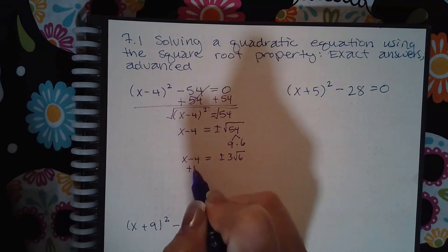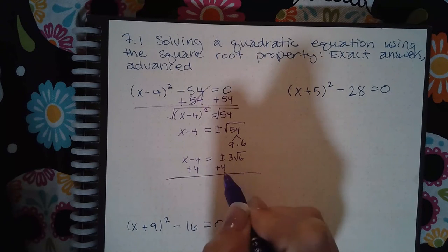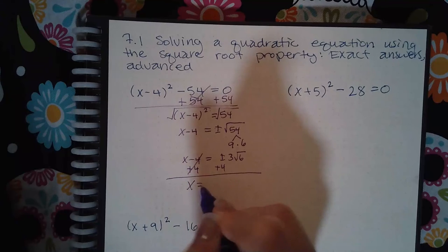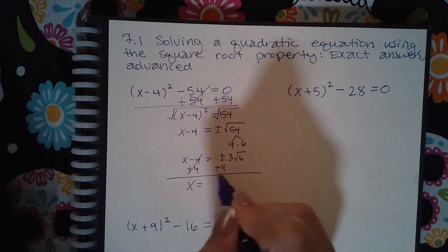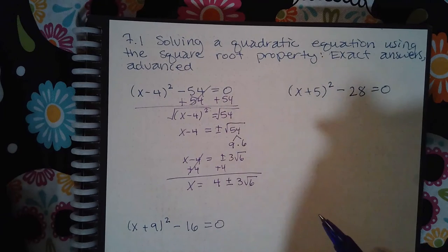And then if I add 4 to both sides, remember these are not like terms. One has a square root attached, the other does not. So we simply write the number without the root in the front, then the plus or minus, and then the 3√6.